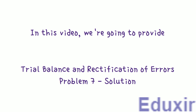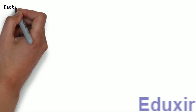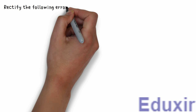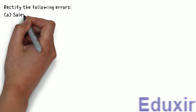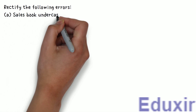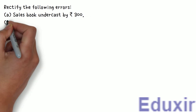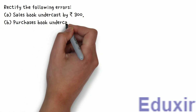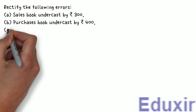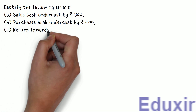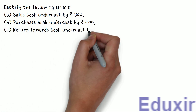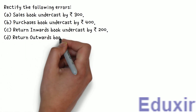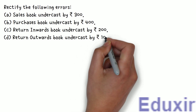The problem statement is as follows: Rectify the following errors. A) Sales book undercast by ₹300. B) Purchases book undercast by ₹400. C) Returns Inwards book undercast by ₹200. D) Returns Outwards book undercast by ₹100.